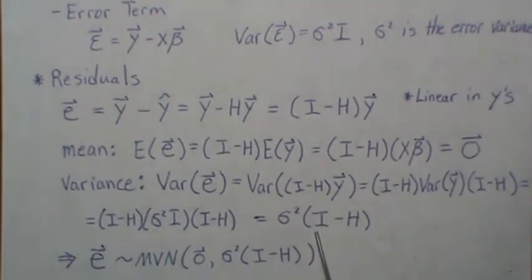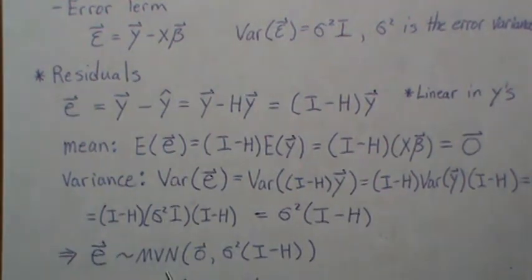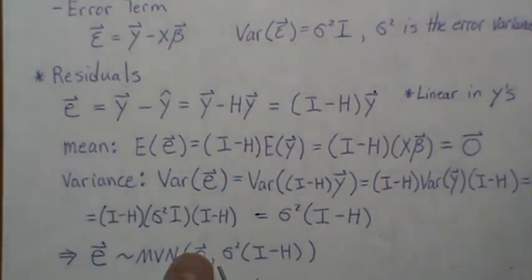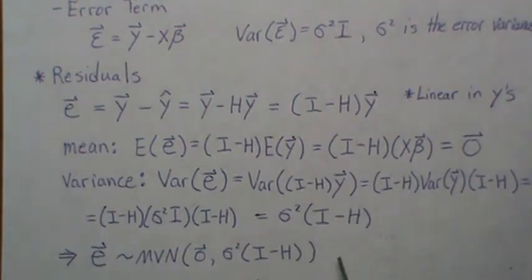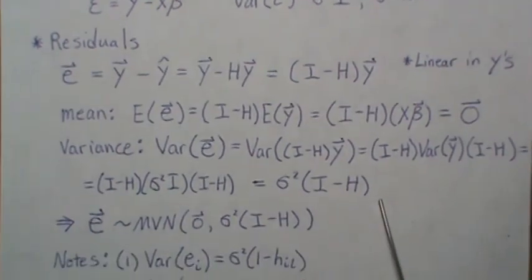Now this implies that the residuals are multivariate normal with mean zero and variance covariance matrix sigma squared times I minus H.